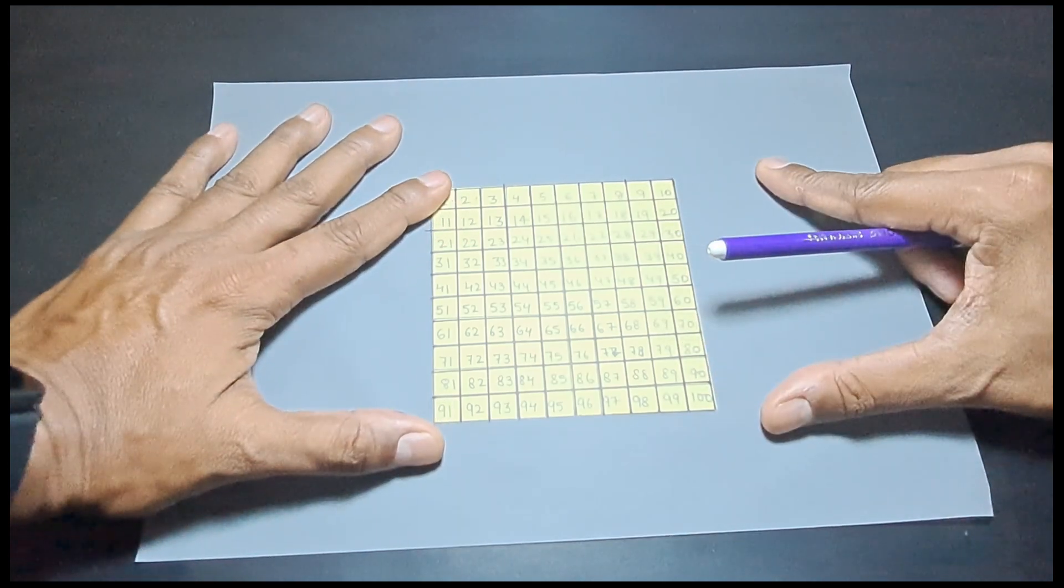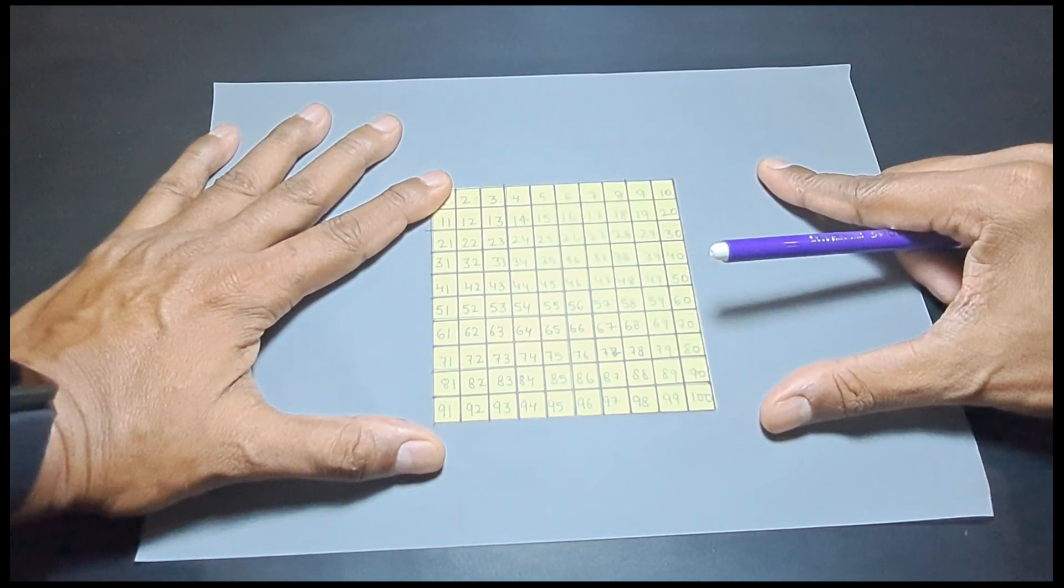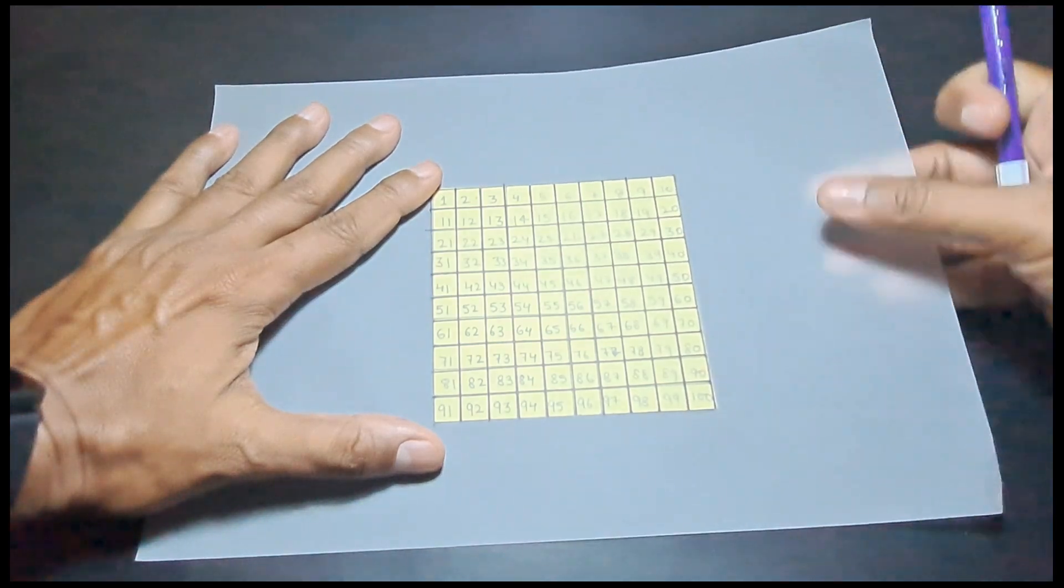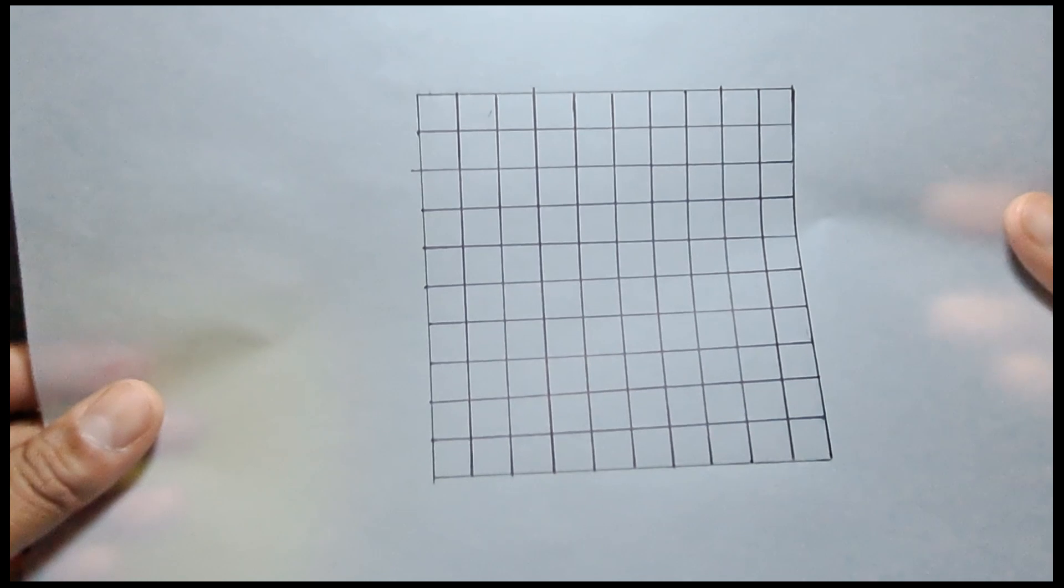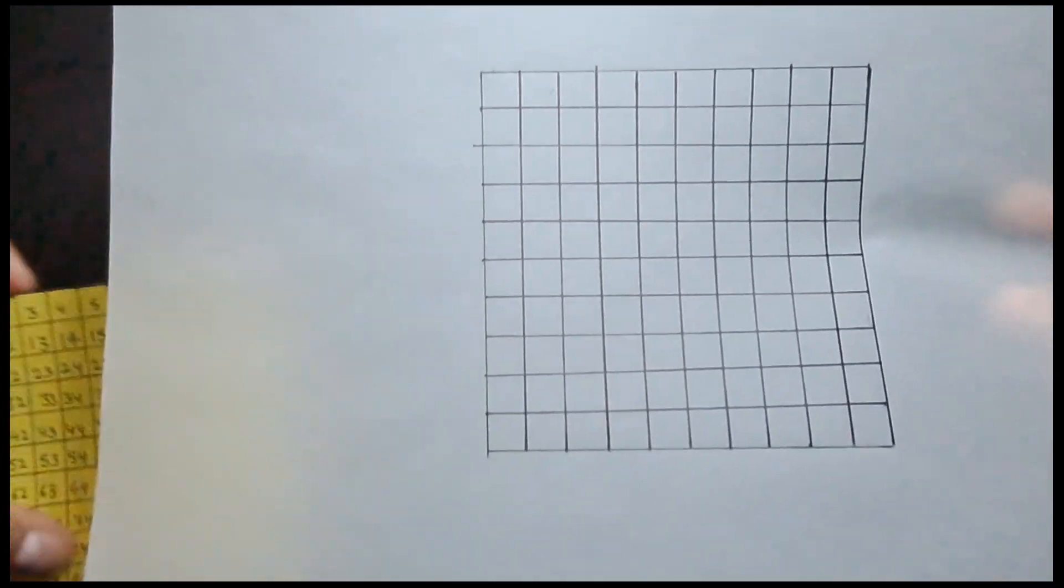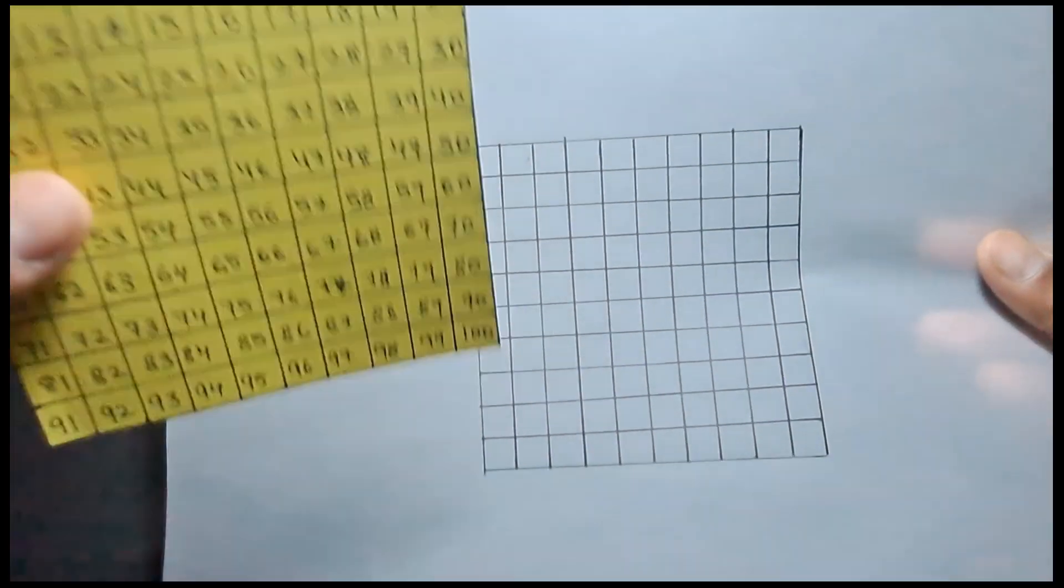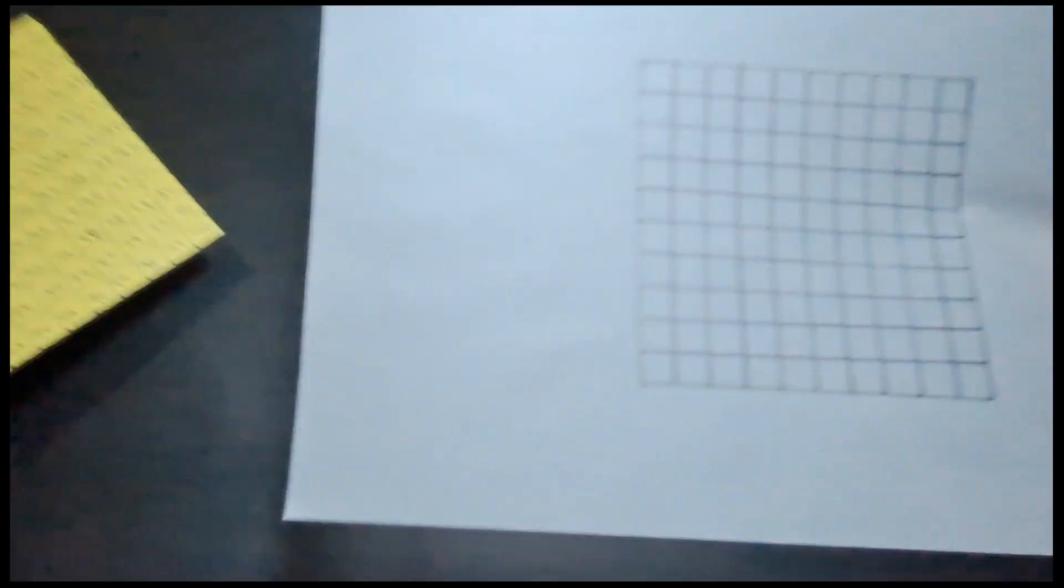So you can see here if I place it like this, this exactly overlaps with this. But if I remove it you will see that only the grid is drawn here, the numbers are not written on this. The numbers are only in the chart paper.